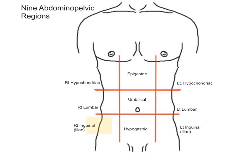The right inguinal, or iliac region — the iliac being the largest part of the hip bone — contains the bottom of the cecum of the colon, the appendix, and part of the small intestine. The hypogastric region, meaning below the belly, is located at the bottom of the middle column and contains the urinary bladder, sigmoid colon, and part of the small intestine.